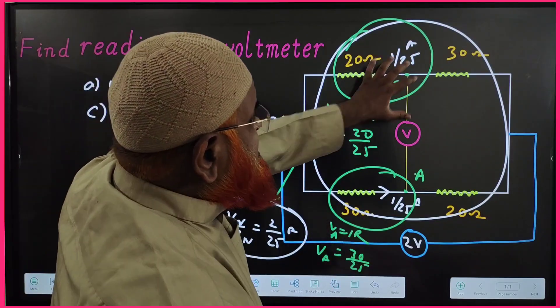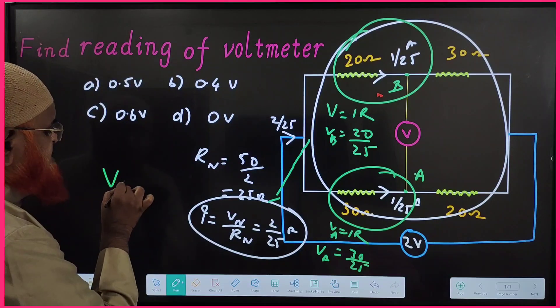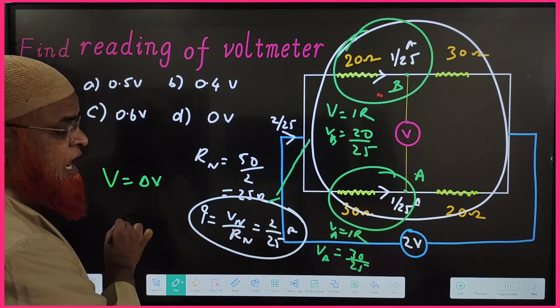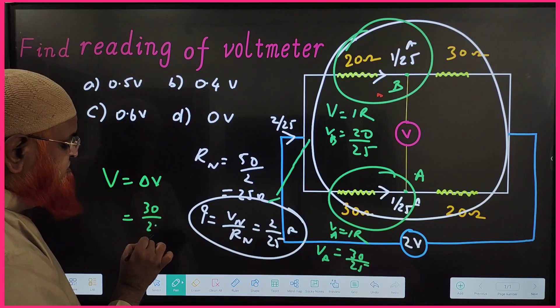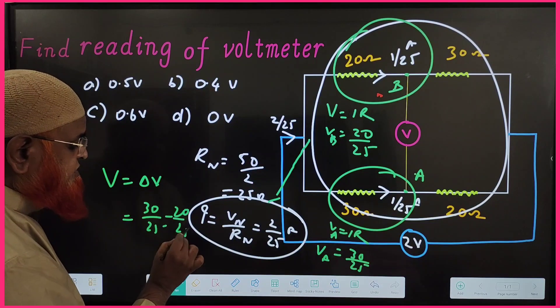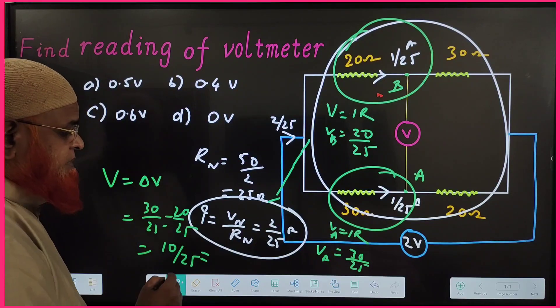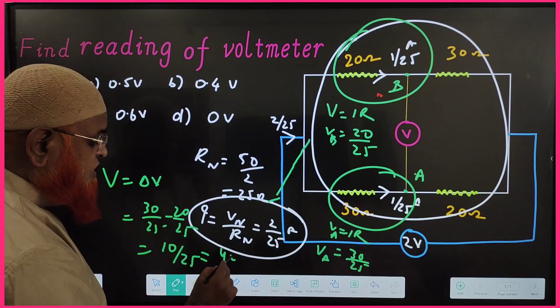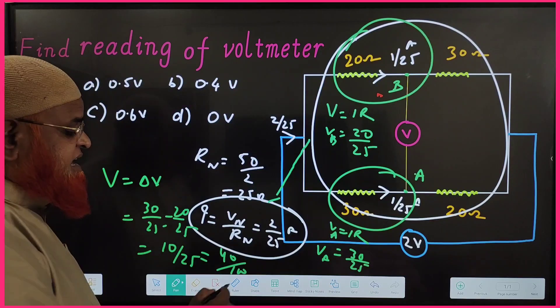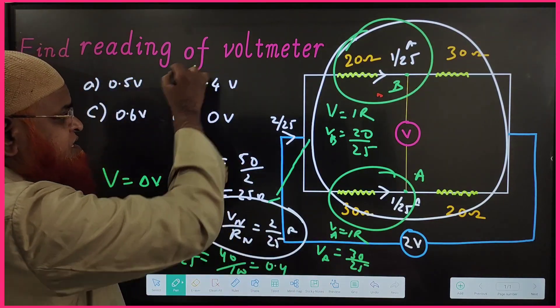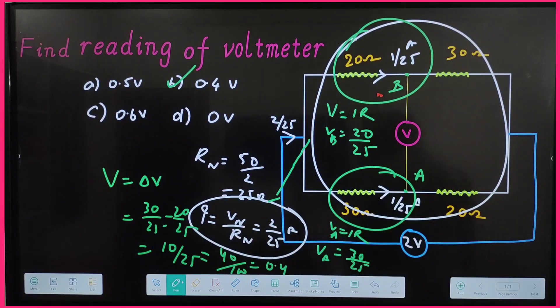And the voltmeter reading is how much? It is going to be the difference. How much is the difference here? 30 by 25 minus 20 by 25, which is nothing but 10 by 25. So it is going to be 40 by 100, if you multiply with 4, which is nothing but 0.4 volts. 0.4 volts, that's it.